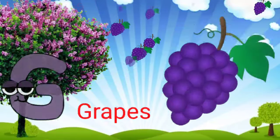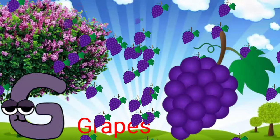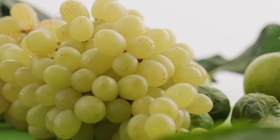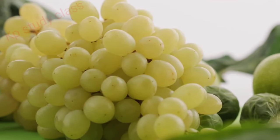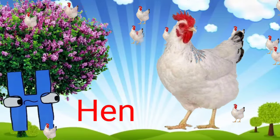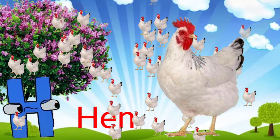G for grapes, grapes means angoor. H for hen, hen means murgi.